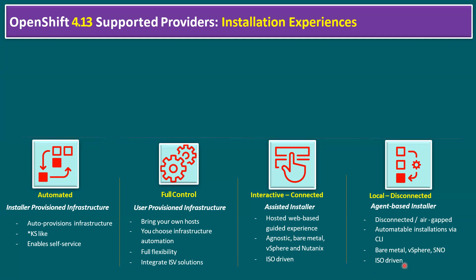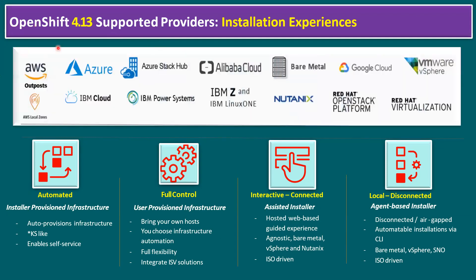Red Hat provides support for multiple providers. It can run on public cloud vendors like AWS — including AWS private cloud (product name AWS Outpost), AWS local zones — as well as Azure, and IBM Cloud. Azure also has a private cloud solution called Azure Stack Hub, so OpenShift can run on Azure Stack Hub as well. It also supports IBM Power Systems, IBM Z, and IBM LinuxONE.